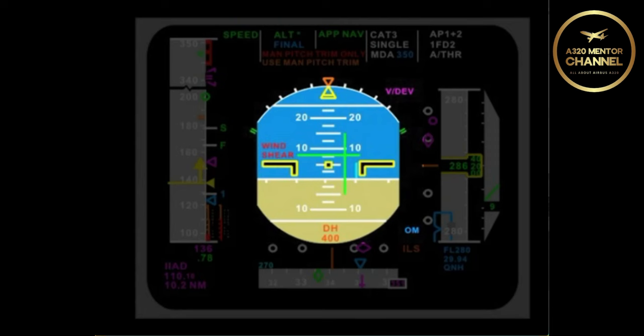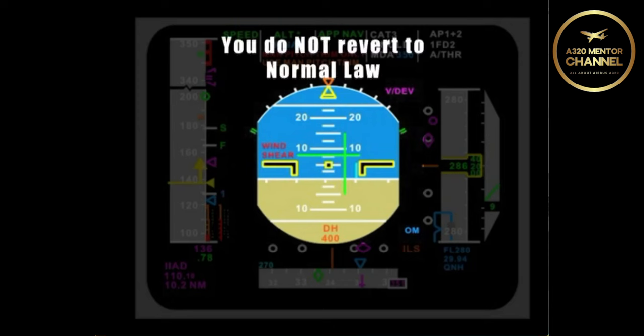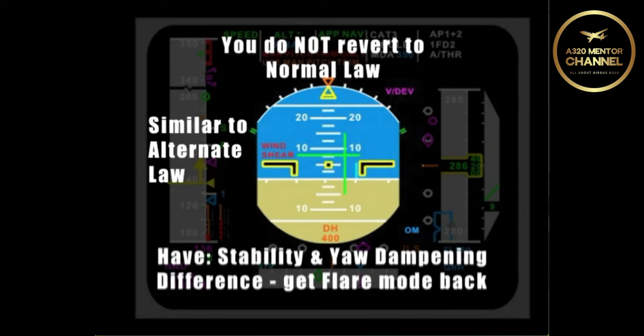You have entered, or how about been thrown into, abnormal attitude law and have recovered. Do you revert back to normal law? No, you definitely do not go back to normal law. You go into something similar to alternate law. You will have stability and yaw dampening. The big difference is that you get flare mode back.